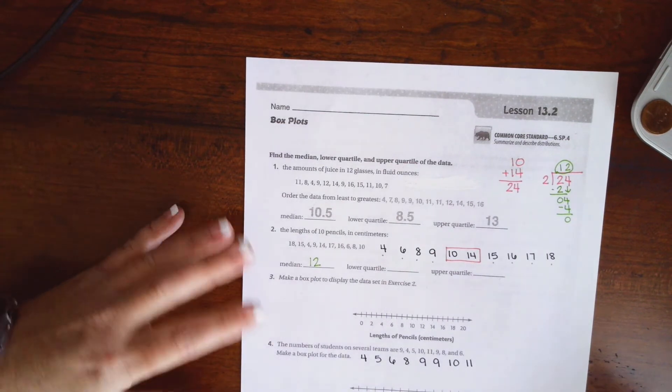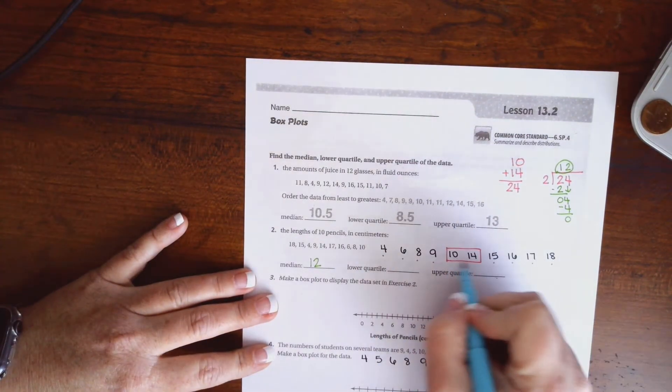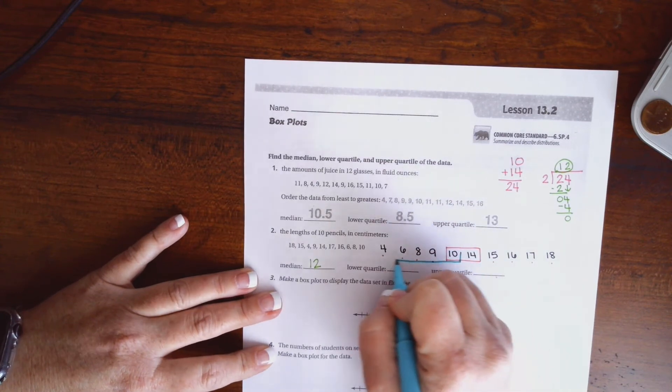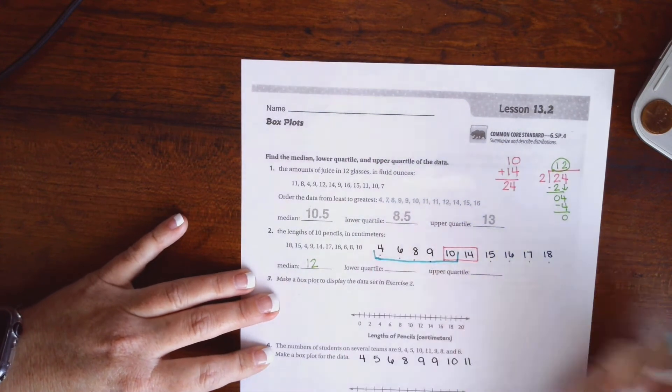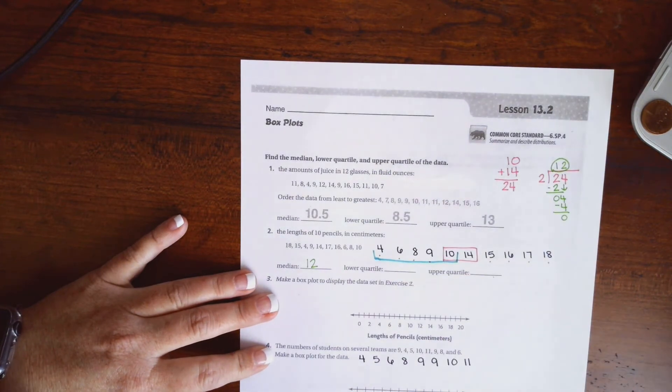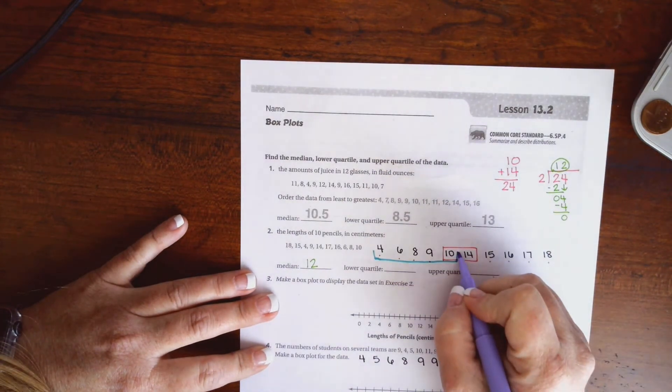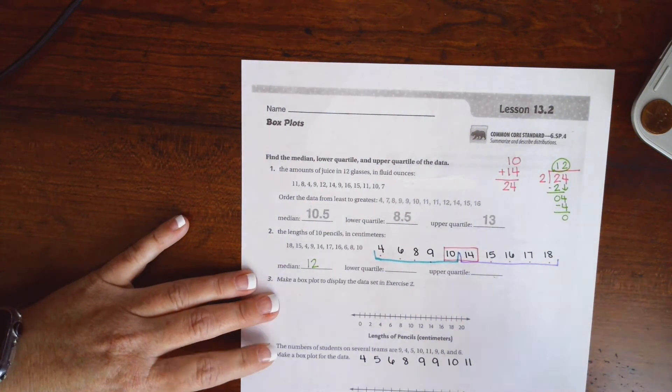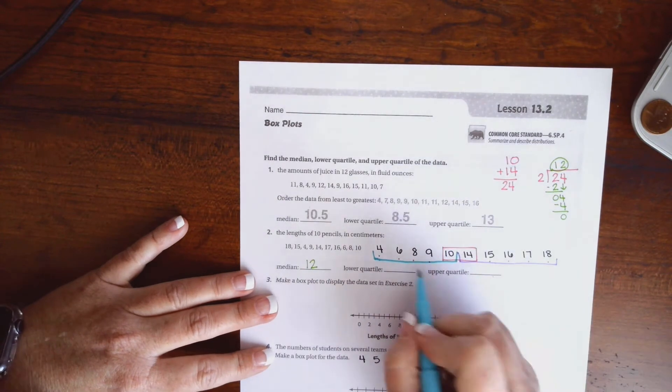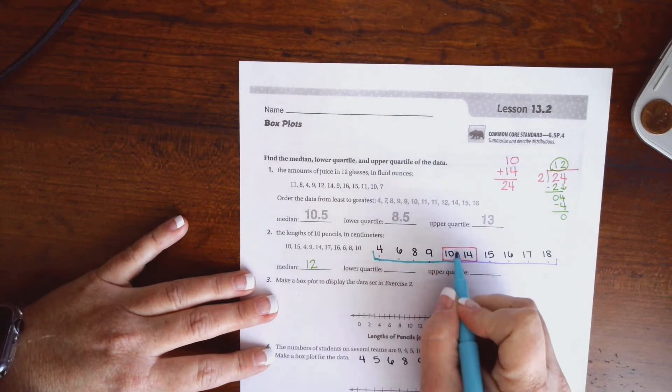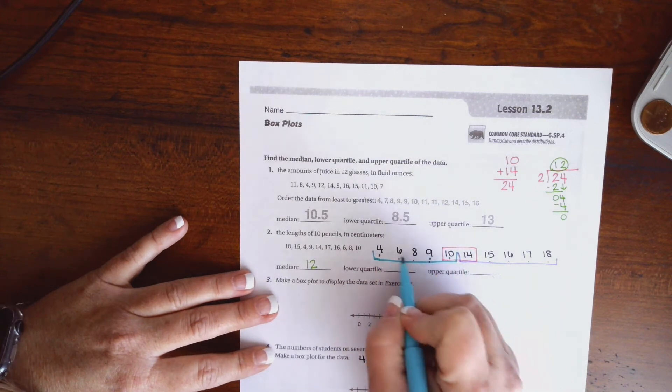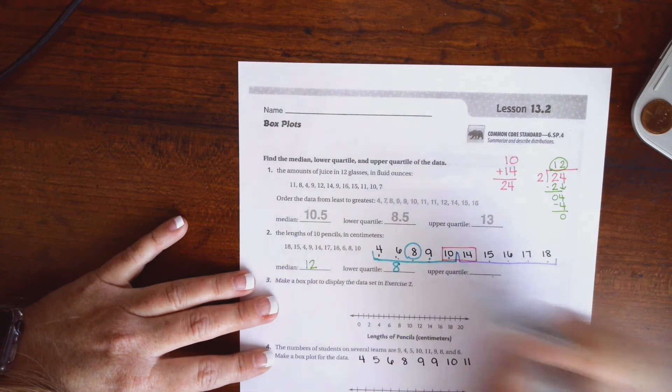Because I have two here, I'm going to find the lower quartile. The lower quartile is just the middle of the lower half of the numbers. So once again, I'm going to put a dot under each one until I get to the middle. So the lower quartile is 8.